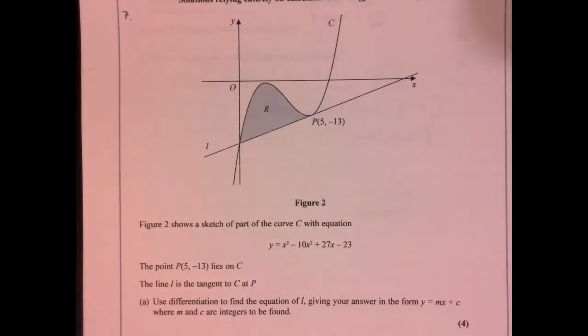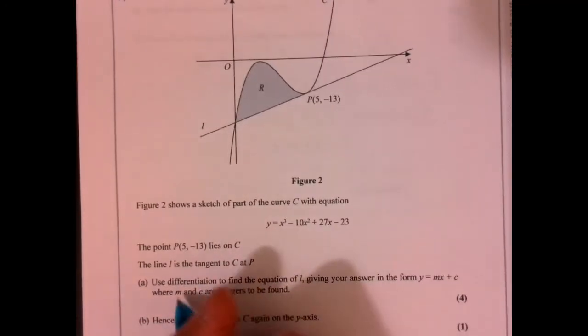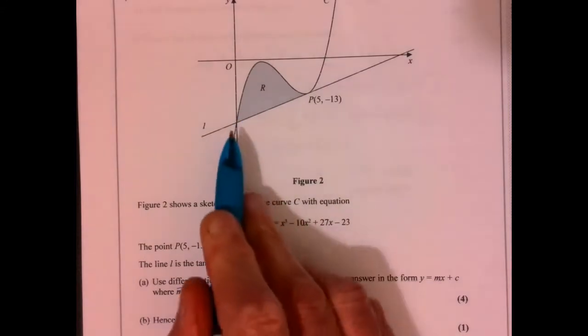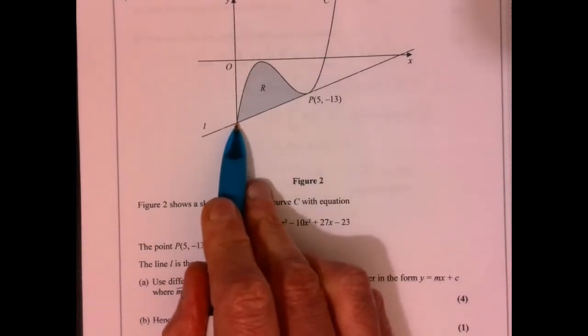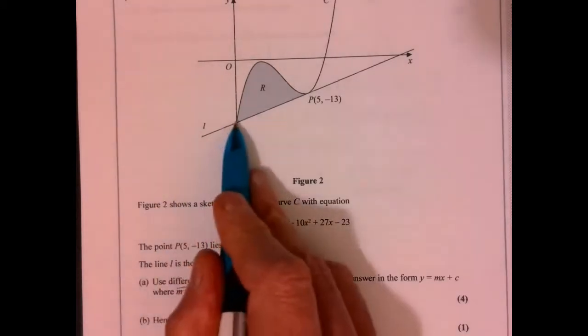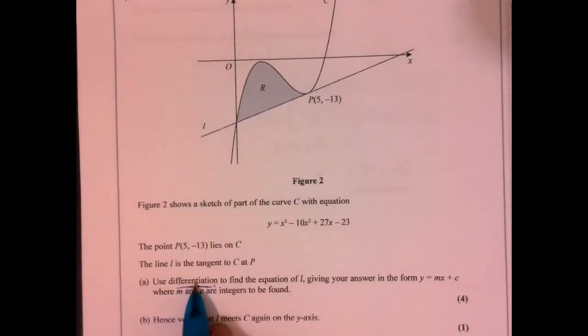Right, question 7. It does say on part A use differentiation. Can't just assume this point. Yes, it does look like what you think it's going to be, but we can't assume that. So use differentiation.